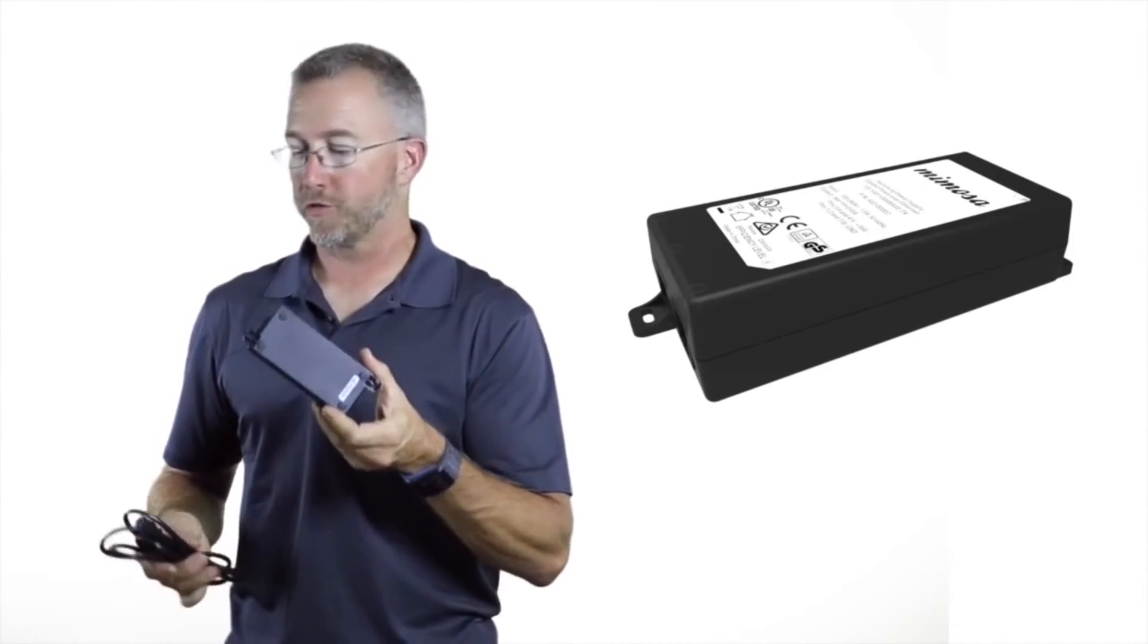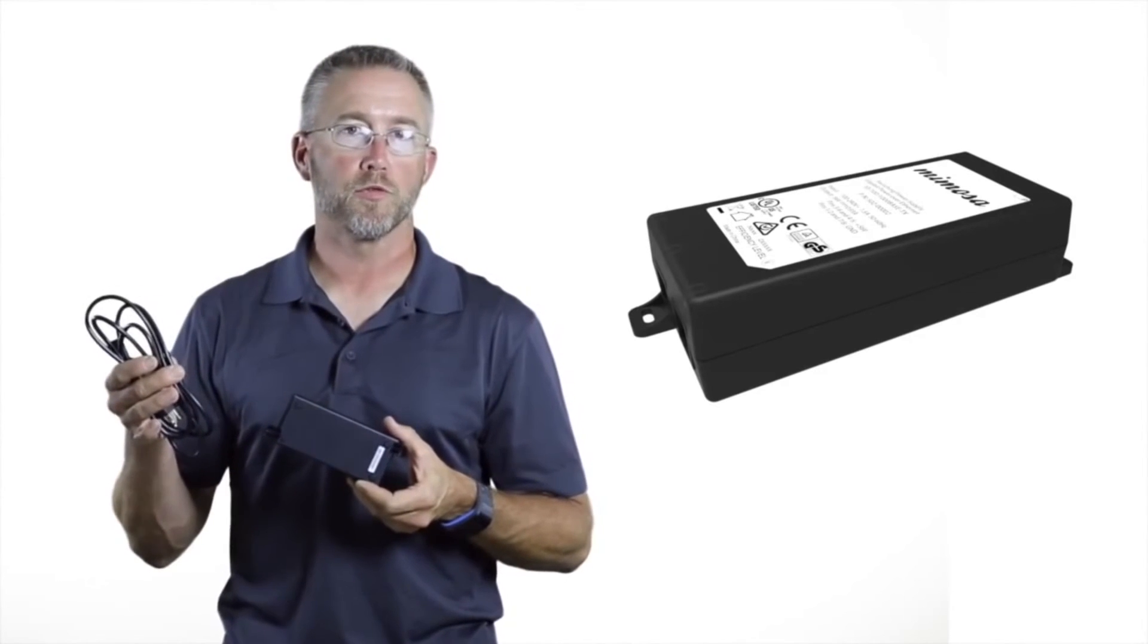The Power over Ethernet brick is shipped with two power cords, one for US and one for Europe.